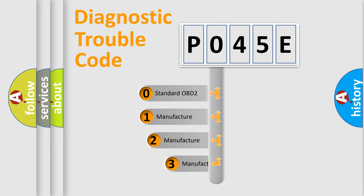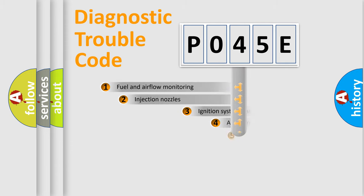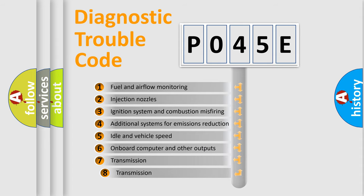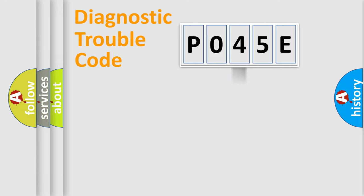If the second character is expressed as zero, it is a standardized error. In the case of numbers 1, 2, or 3, it is a manufacturer-specific error. The third character specifies a subset of errors. The distribution shown is valid only for the standardized DTC code.